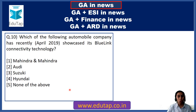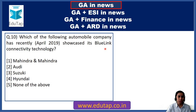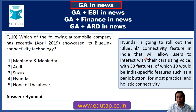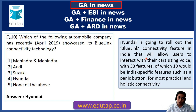Question 10: Which automobile company has recently showcased its Blue Link Connectivity Technology? The answer is Hyundai. Hyundai has rolled out its Blue Link Connectivity feature in India. This feature allows users to interact with their cars using voice and other features. Keep in mind: Hyundai, automobile company, Blue Link Connectivity Technology.